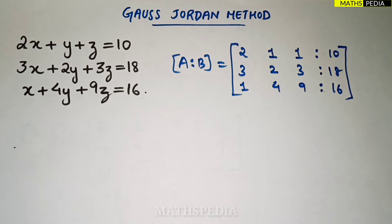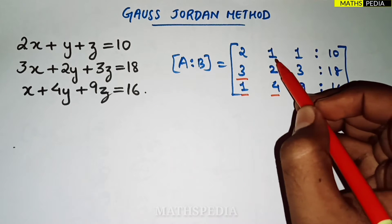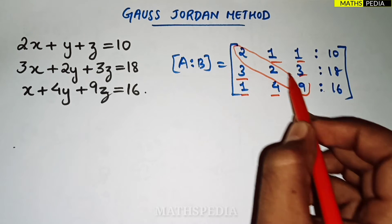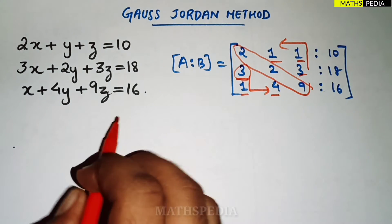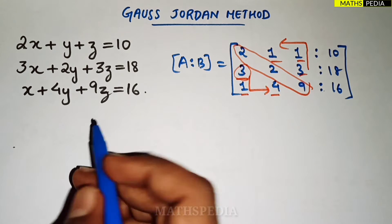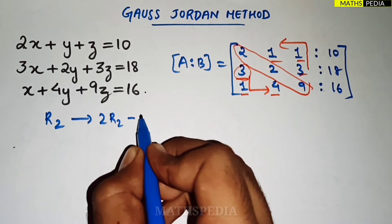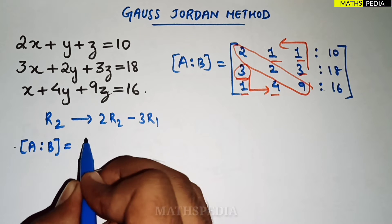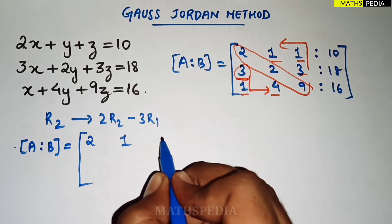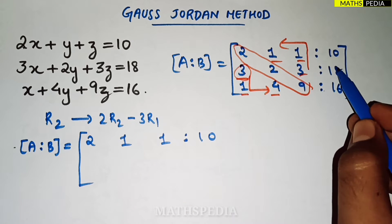Now we apply row operations so that the off-diagonal elements become zero, leaving the diagonal elements. Starting with the path: the first pivot is 3 in row 1. I apply R2 = 2·R2 − 3·R1. This gives 2·3 − 3·2 = 6 − 6 = 0 for the first element of R2. The first row remains as 2, 1, 1 | 10, and the third row remains unchanged as 1, 4, 9 | 16.